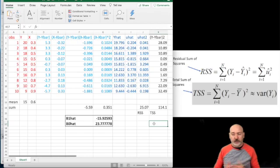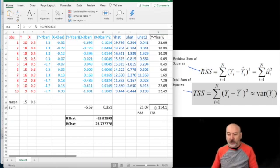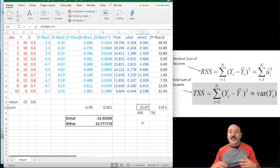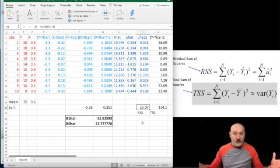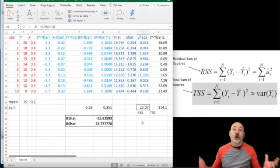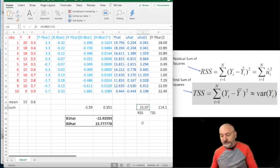So the easy way to think about this is in squared units of our Y variable, this is the total variation, 114.1 squared units. The RSS, the 25.07, that's the squared variation in Y that we were unable to explain. So now we can kind of put that into context.